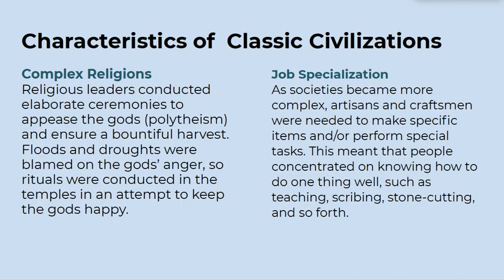Complex religions: religious leaders conducted elaborate ceremonies to appease the gods — polytheism — and ensure a bountiful harvest. Floods and droughts were blamed on the gods' anger, so rituals were conducted in the temples in an attempt to keep the gods happy.